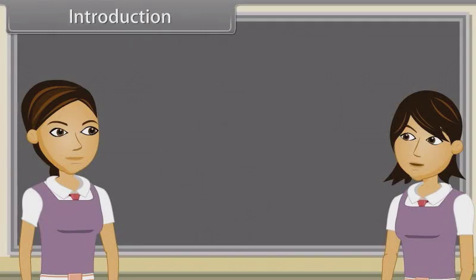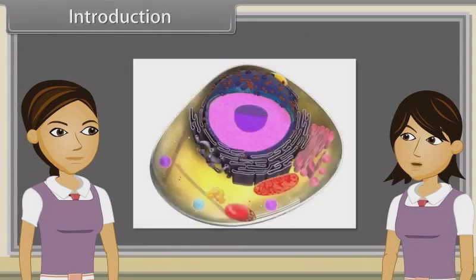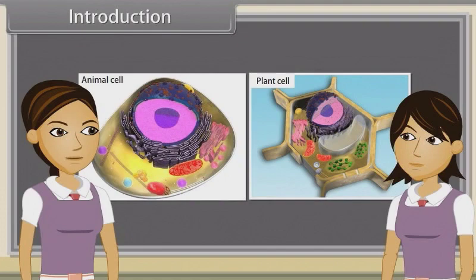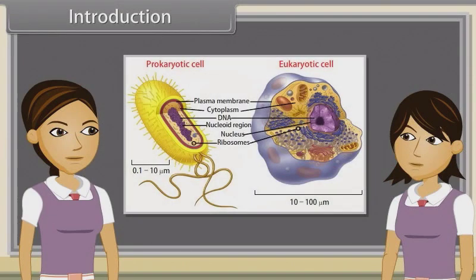Ankita, we have discussed cell theory, structure and functional regions of cell already. Yes, and now we'll discuss that there are two types of cells, plant cells and animal cells. We'll also observe the structure of plant and animal cells and discuss the difference between plant and animal cells, as well as prokaryotic and eukaryotic cells.